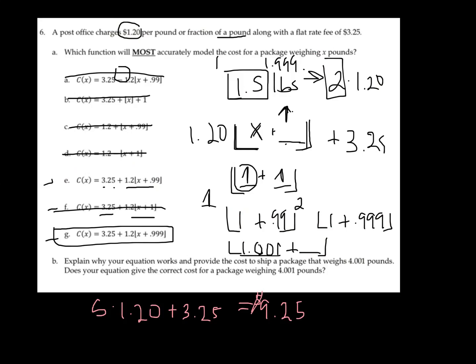And what you'd want to do is you'd want to plug this into your equation, and sure enough, you'd get exactly that. And you'd explain that that's correct because you have something that weighs 4 pounds plus another fraction of a pound, which should cost 5 times $1.20 plus the flat fee.